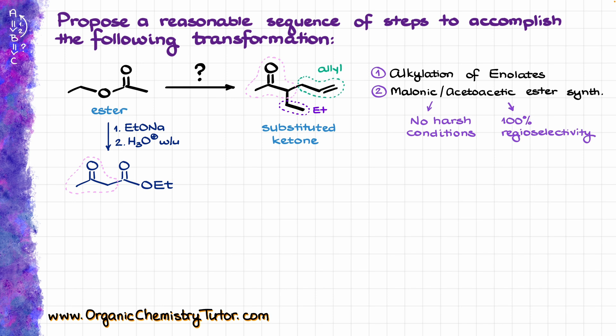the decarboxylation reaction. The exact order in which I'm going to add my groups here is not particularly relevant, so I'm going to start with the ethyl group first. In order to add that one, I'm going to enolize my acetoacetic ester and treat it with ethyl bromide to get my product with the ethyl group on it.